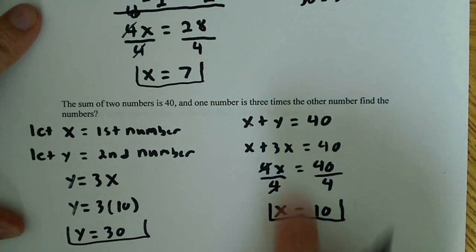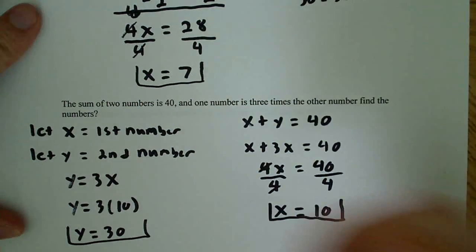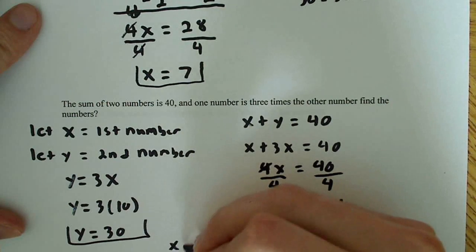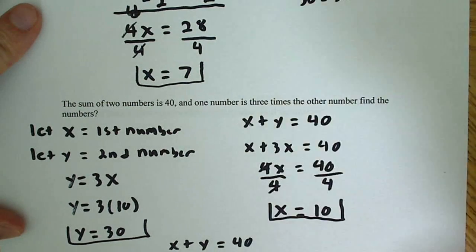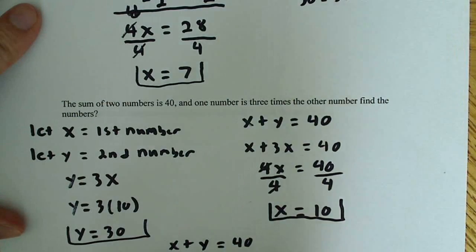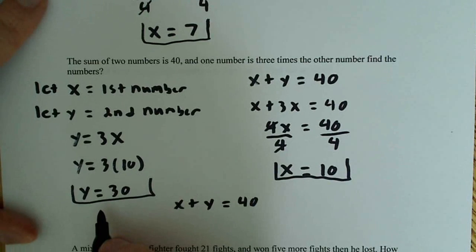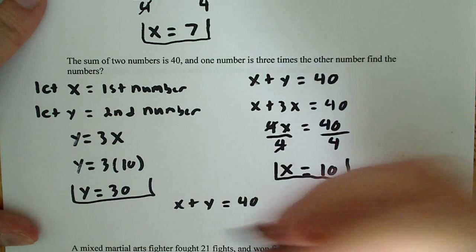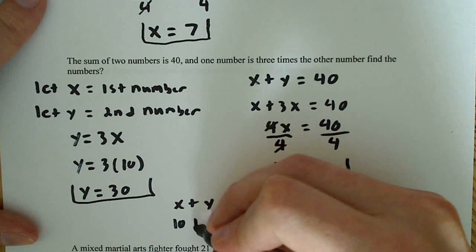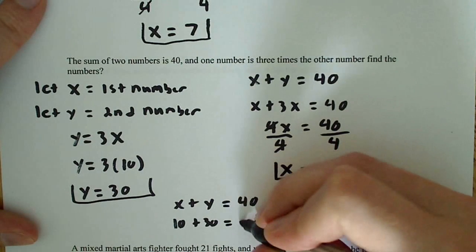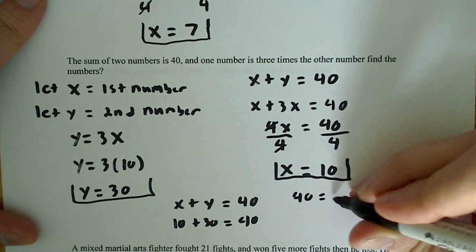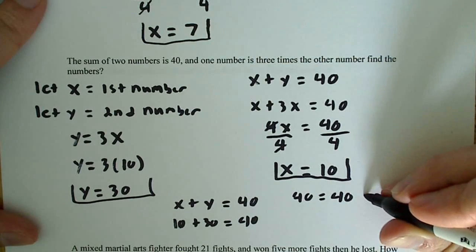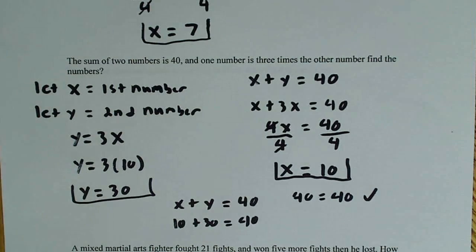Now, to check this again, all we have to do is use this equation up here to check it. So we say x plus y is equal to 40, substituting in 10 for x and substituting in 30 for y. So we can say 10 plus 30 is equal to 40, and as you can see, 40 equals 40. So we know the answer is correct.